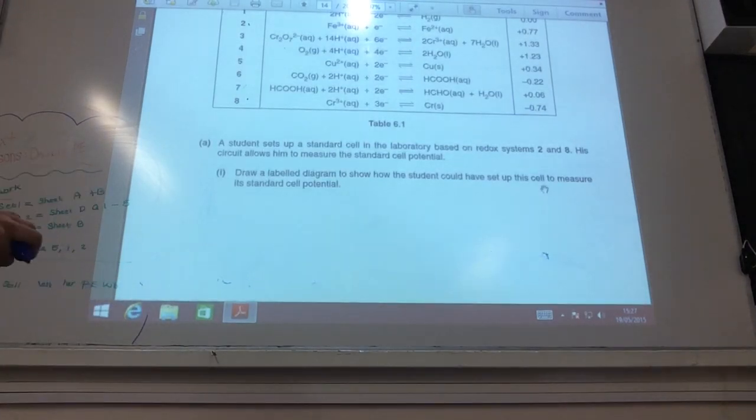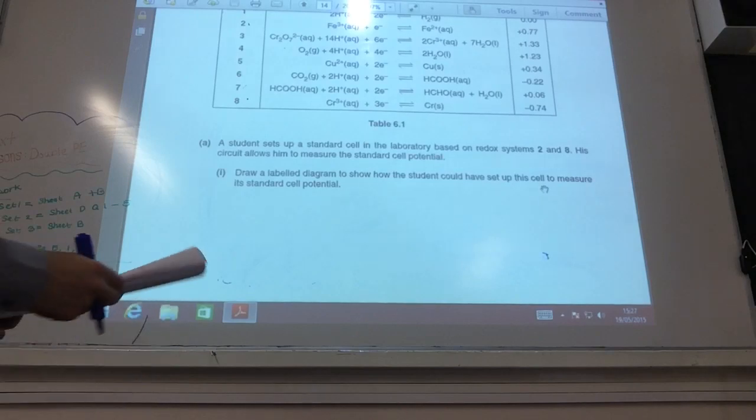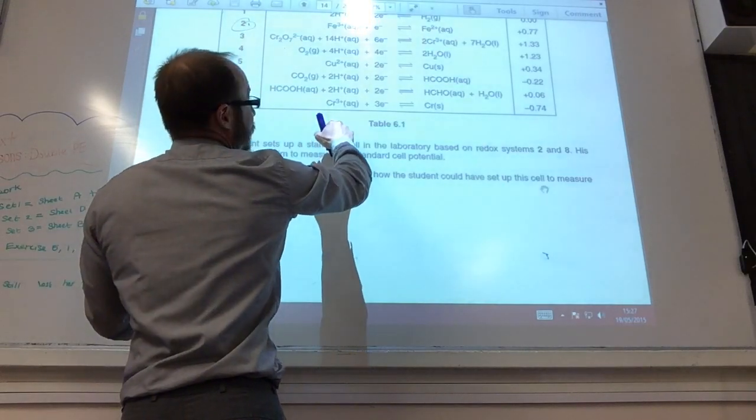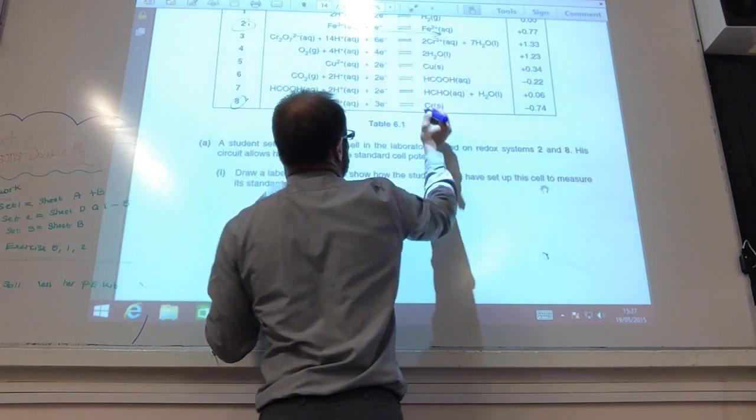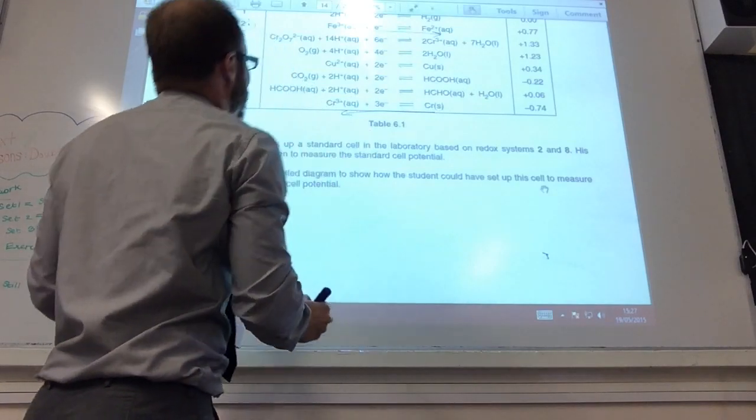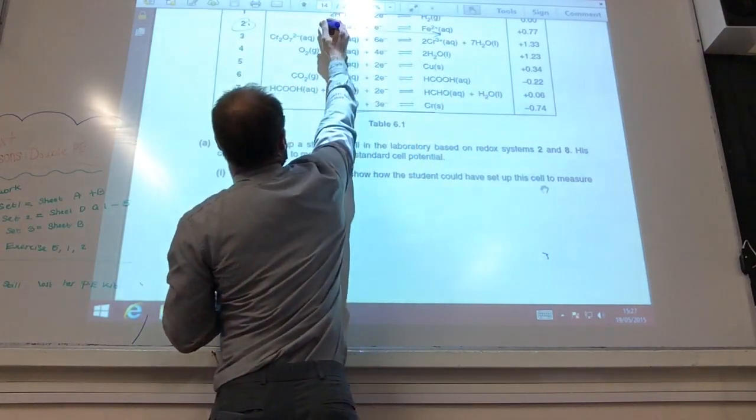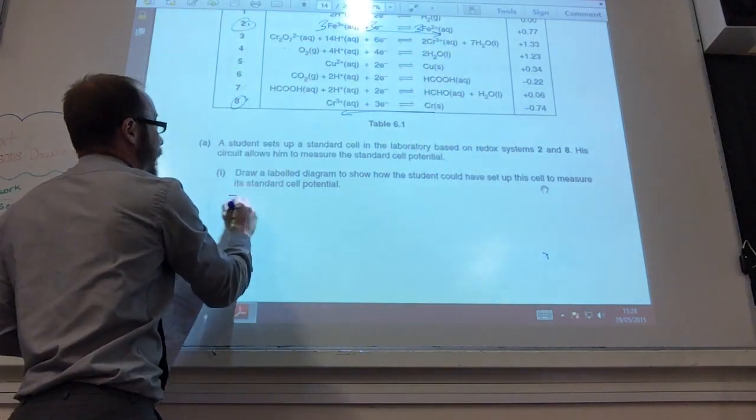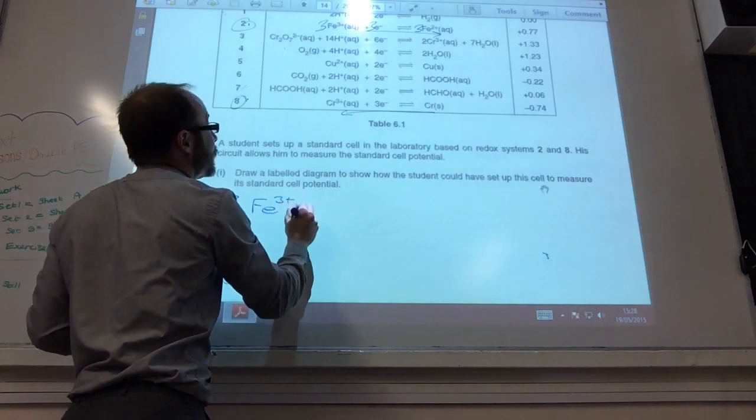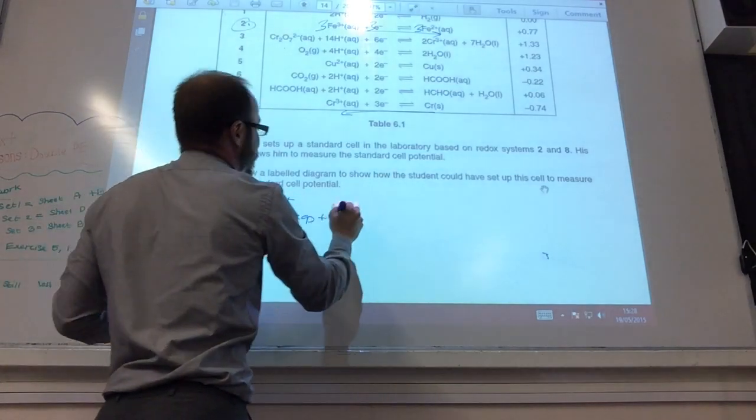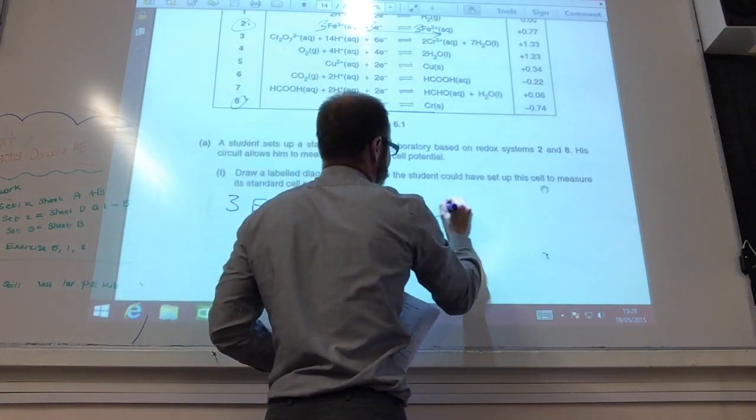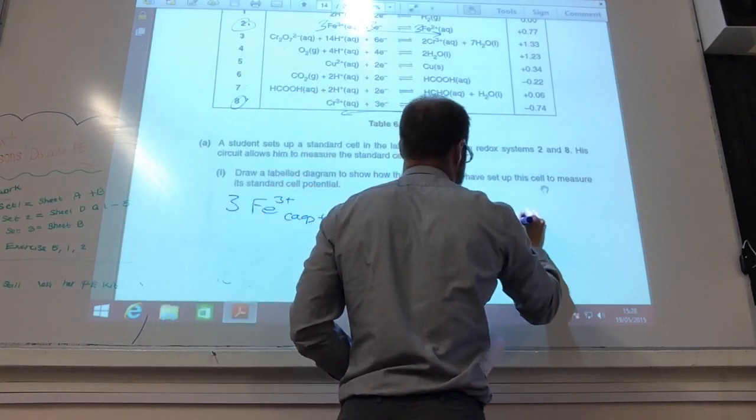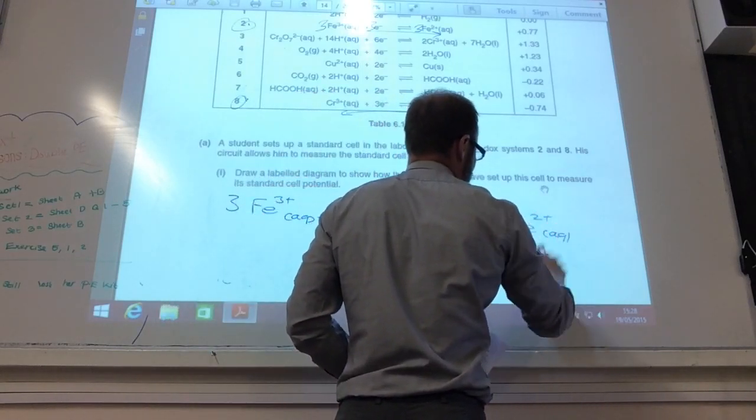The next question wants me to write the overall cell reaction. So, remember, I'm operating on 2 and 8. 2 is the most positive, so that's going to go that way. This one's the more negative, but if you look at it, that's got 3 electrons, that's only got 1, so I need to times that by 3. So, I'm going to end up with 3Fe3+ aqueous plus chromium solid goes to chromium 3+ aqueous plus 3Fe2+ aqueous.